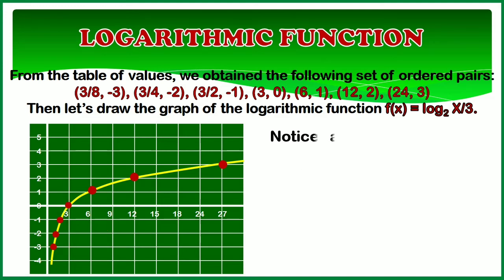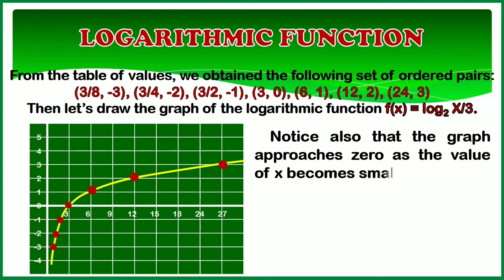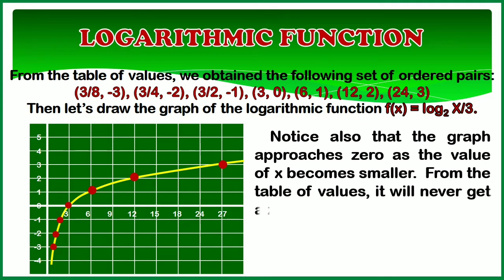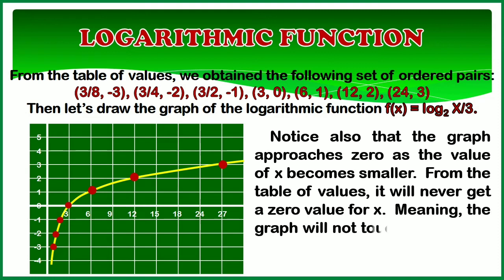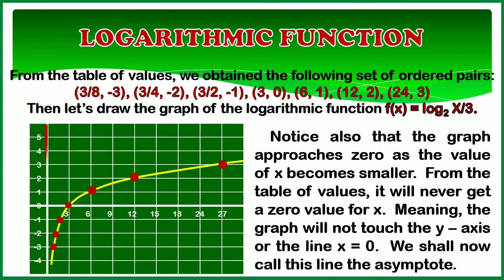Notice also that the graph approaches 0 as the value of x becomes smaller. From the table of values, it will never get a 0 value for x. Meaning, the graph will not touch the y-axis or the line x equals 0. We shall now call this line the asymptote.